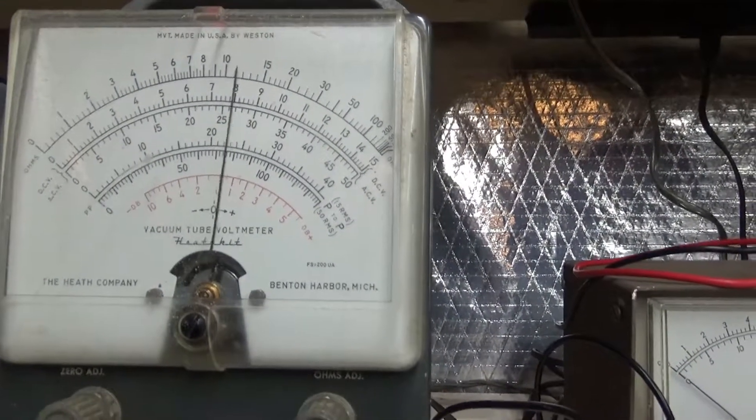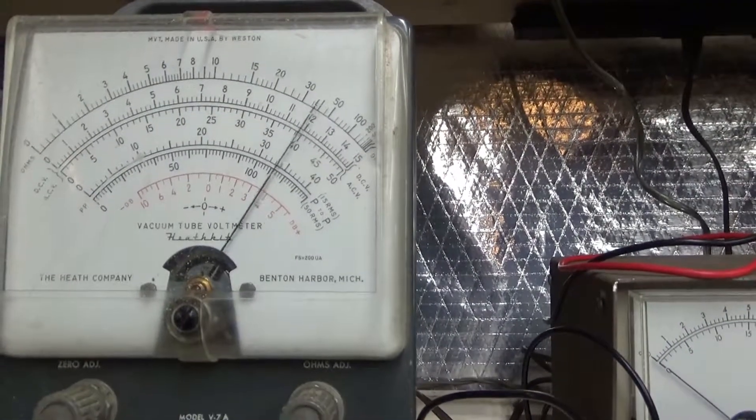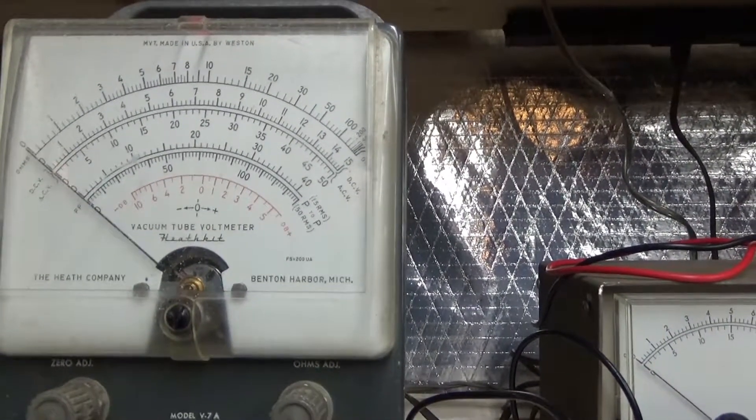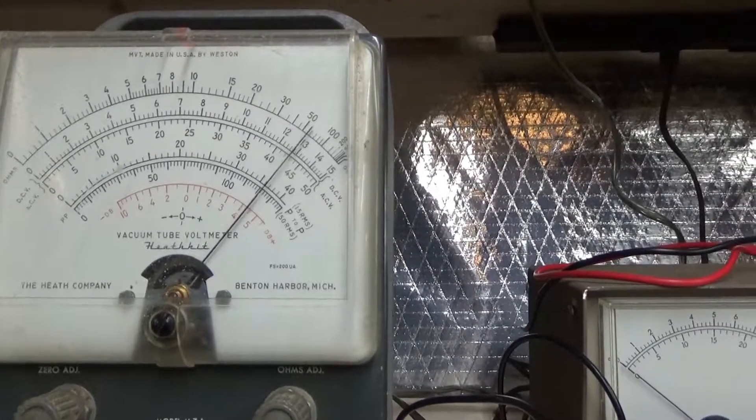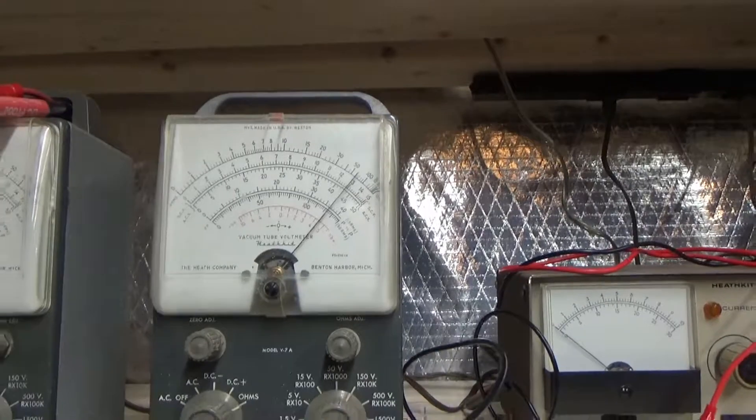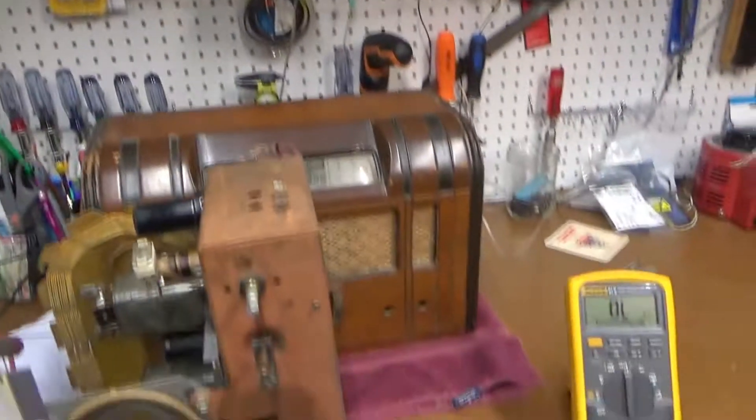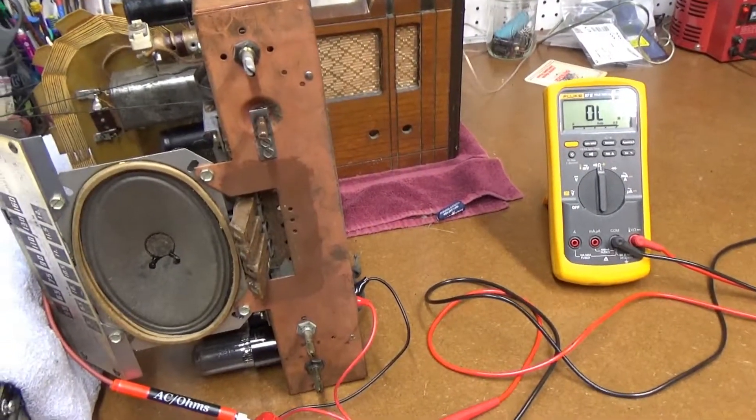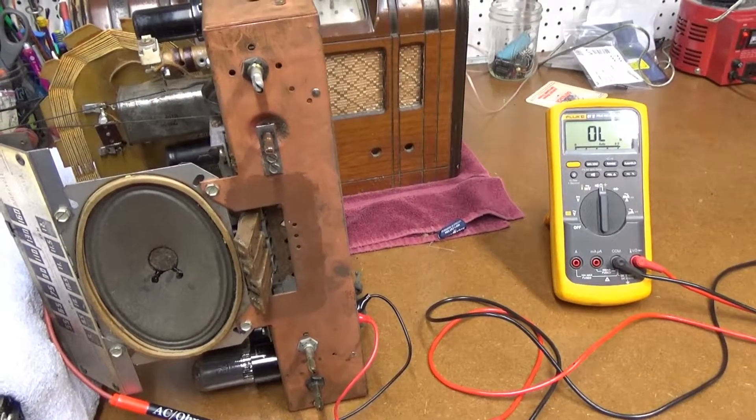You can see by the meter movement that you have no dead spots or dirtiness to the pot and sweep arm. One reason why you need a VTVM for your workshop.